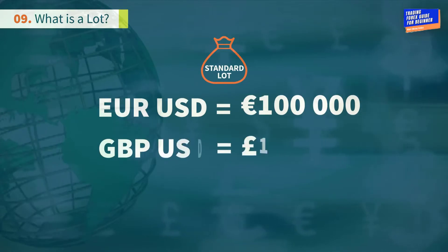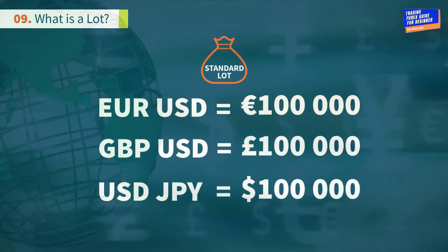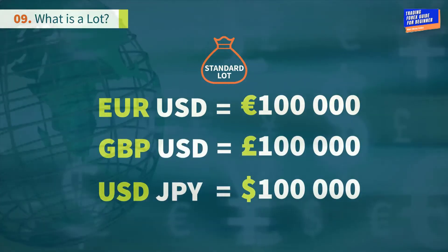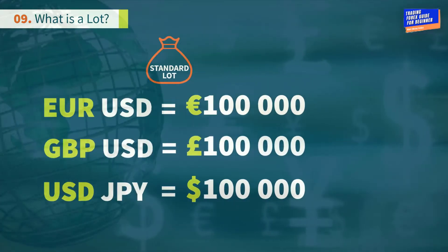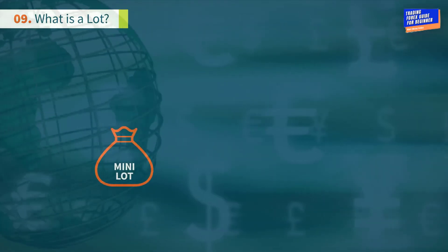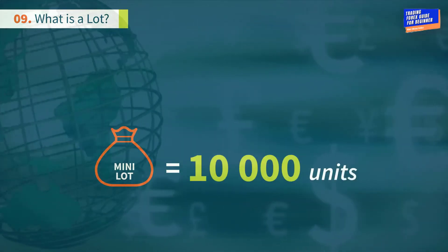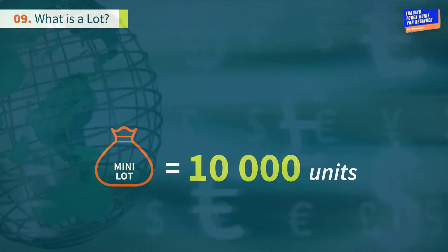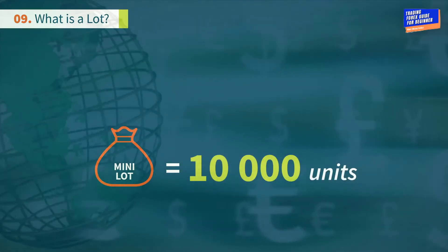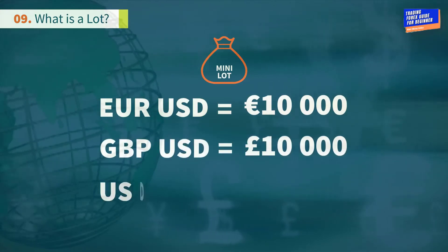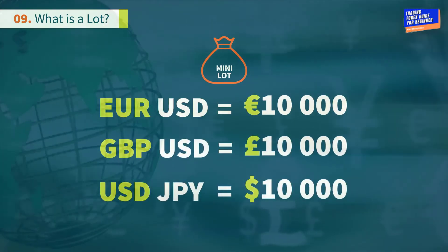Here are a few examples. One mini lot is equal to 10,000 units of the base currency. Here are some examples.